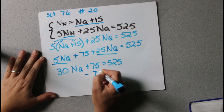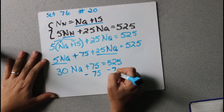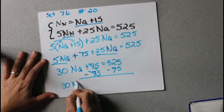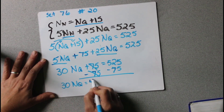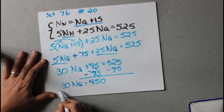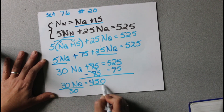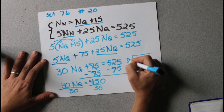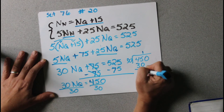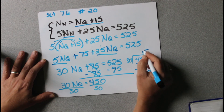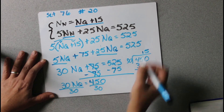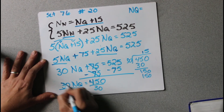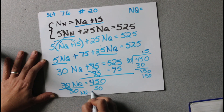Now we're going to subtract 75 from both sides, and we get 30nq equals 450. Now we divide by 30. 450 divided by 30 — 5 times 30 is 150, so nq is equal to... and we get nq equals 15.